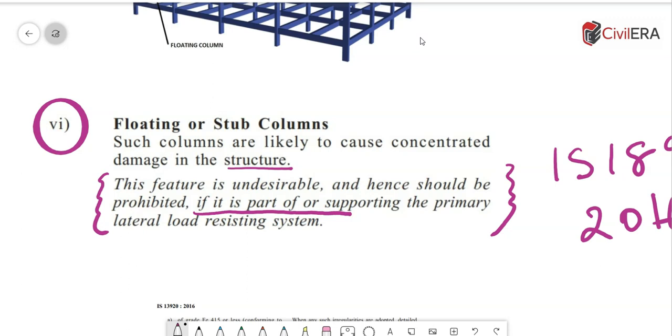It cannot be a part, nor can it support a part which is going to be lateral resisting. Which means that if I take the example of this particular building and if I zoom here, this column as a whole cannot be part of the lateral load resisting system.